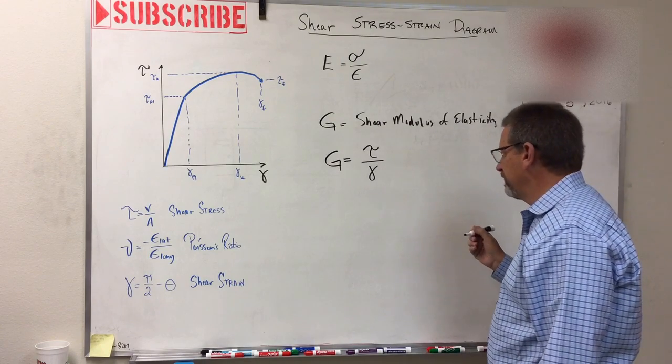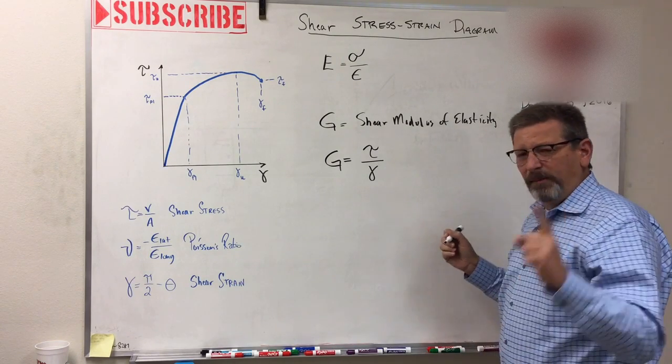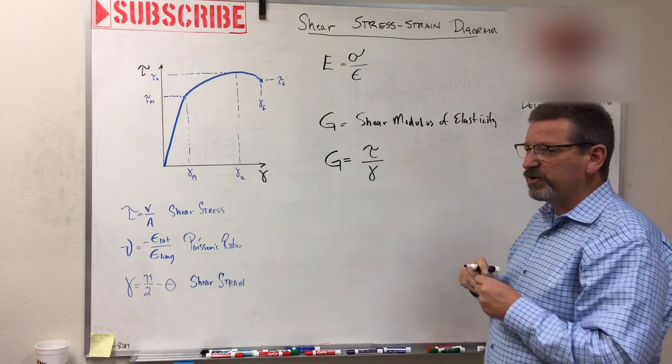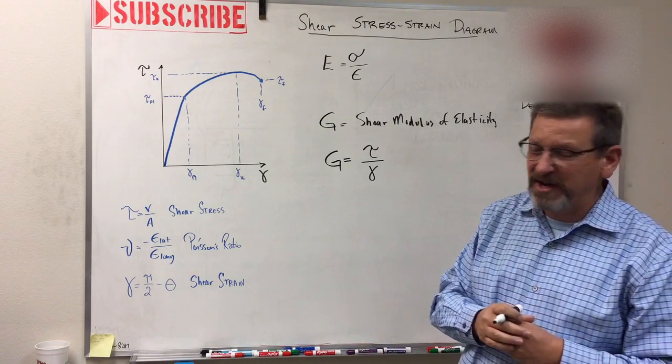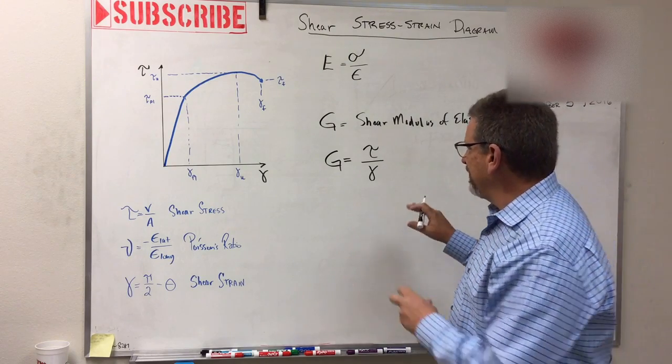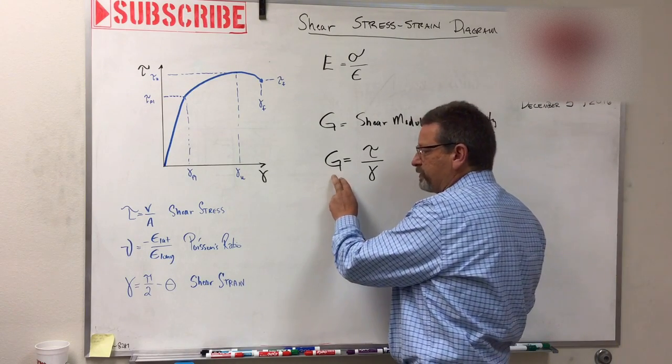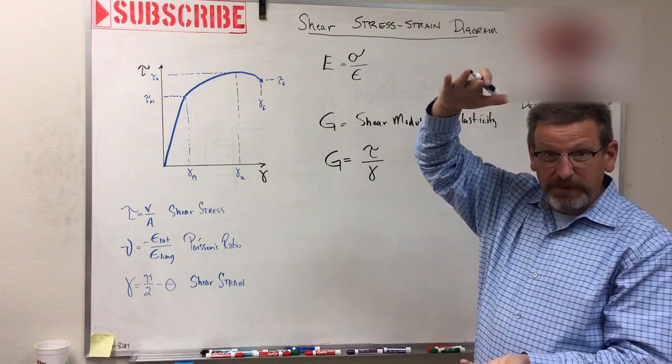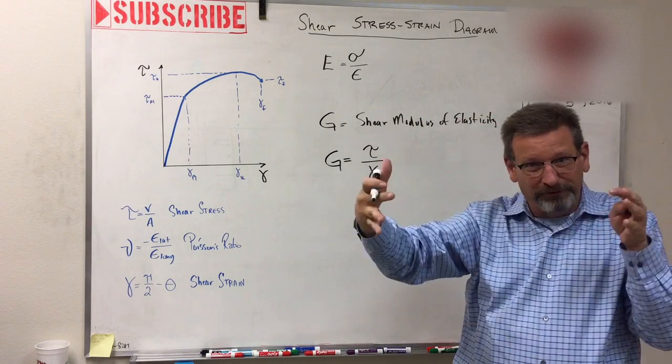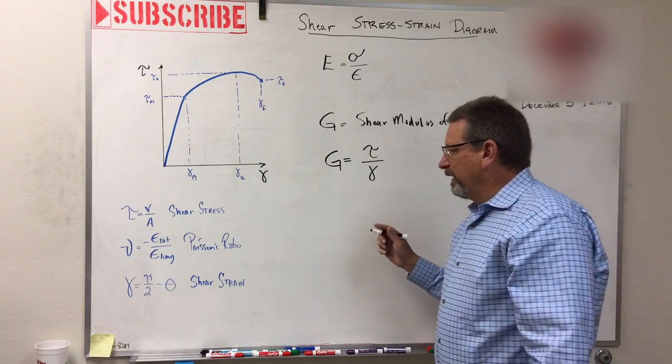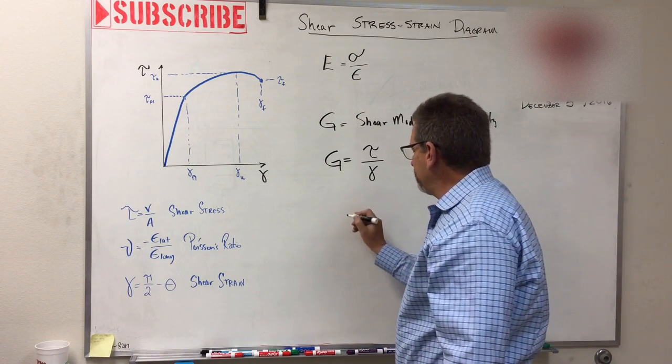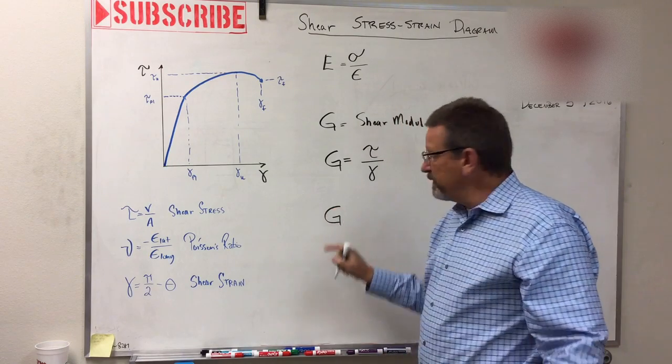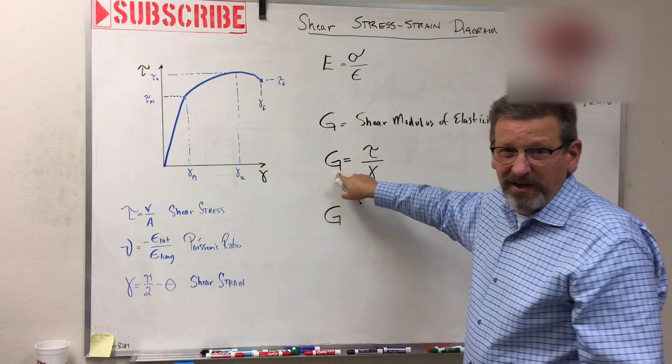There's one more equation that I want to tell you about that's in this chapter. It's actually derived later, in chapter 10. But the other thing is, as things start to shear, Poisson's ratio—remember Poisson's ratio, the marshmallow rule: if I squeeze it this way, it grows that way—it's also related to G, the shear modulus of elasticity.